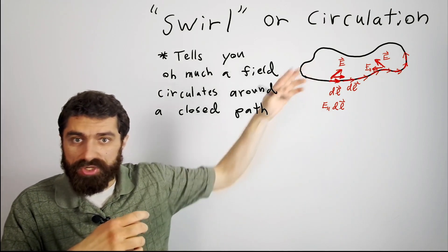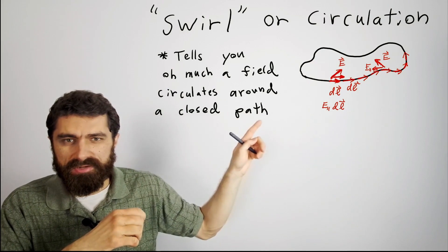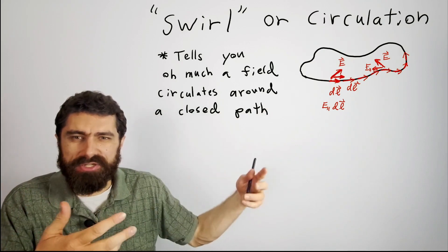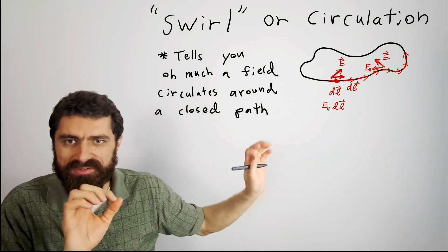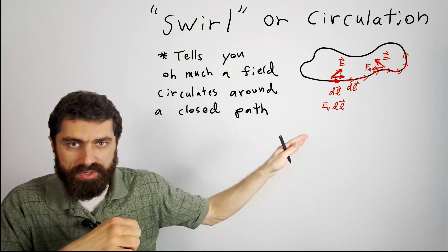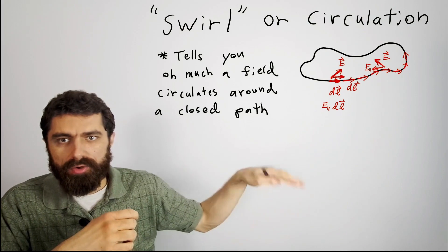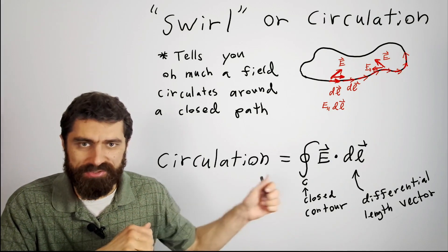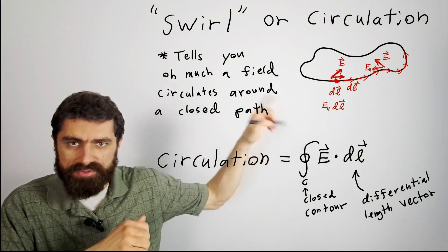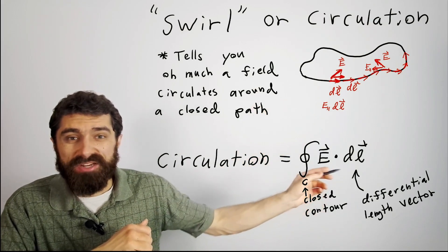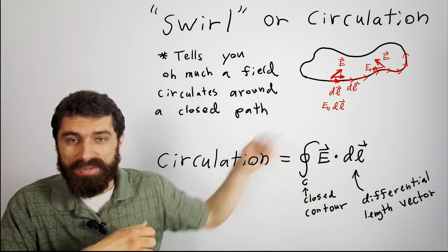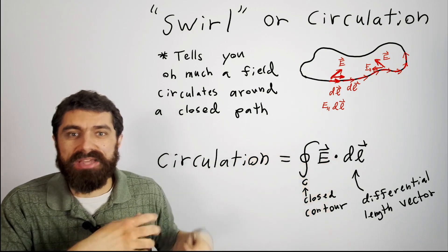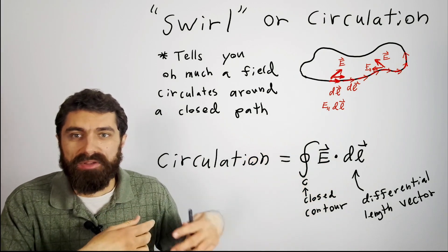If you do an integration around the whole loop with DL oriented in the counterclockwise direction, you can figure out what is the net circulation in the counterclockwise direction. The orientation of your DL vector tells you what direction you're looking for in the circulation. Mathematically, this is the integral over the closed loop of E dotted with DL — you use the dot product to find the parallel component, and adding all these up gives you the overall circulation through that loop.